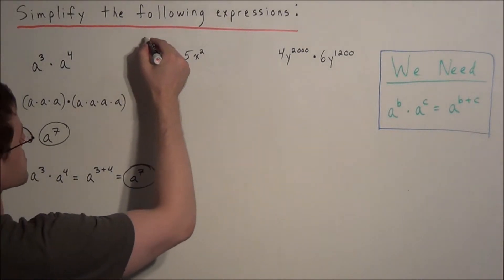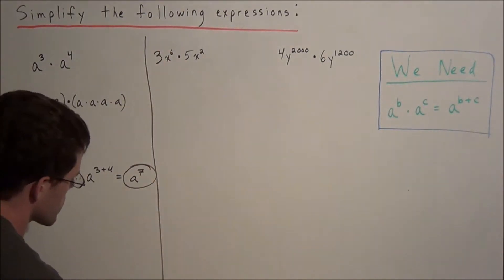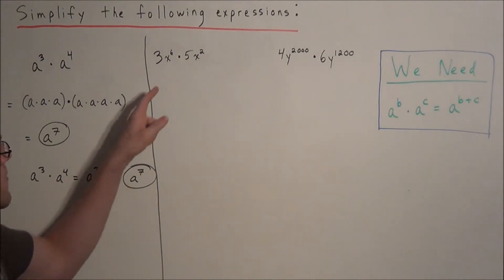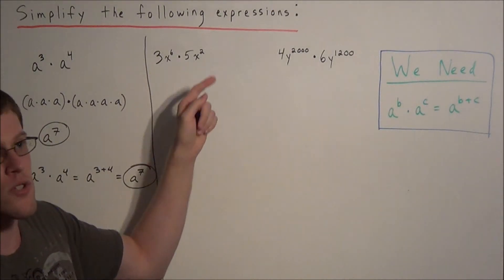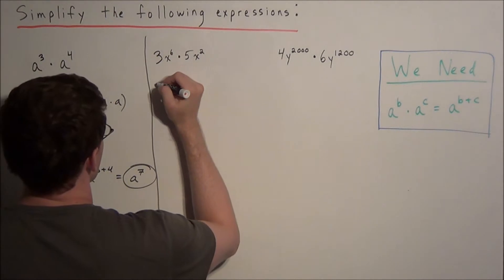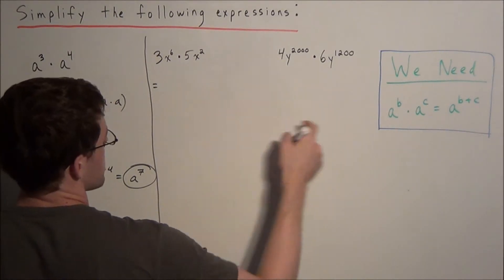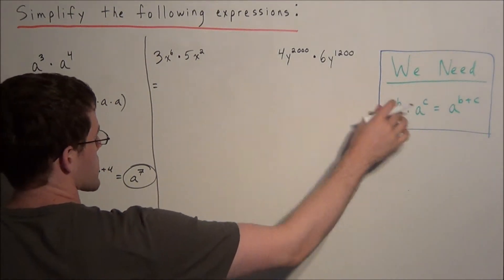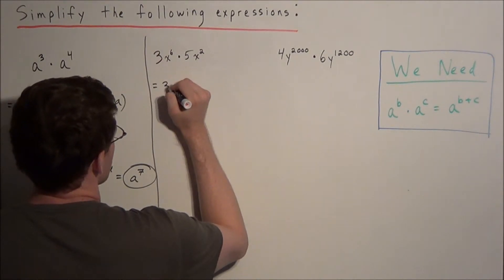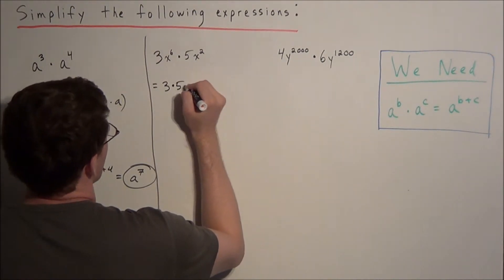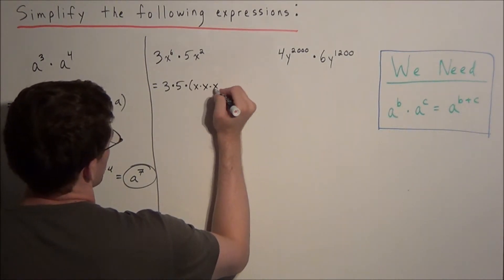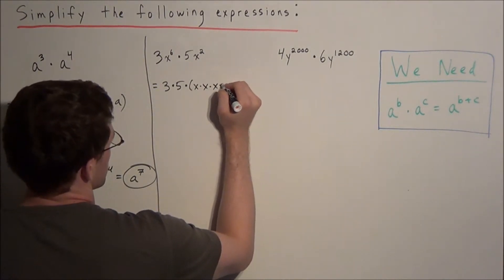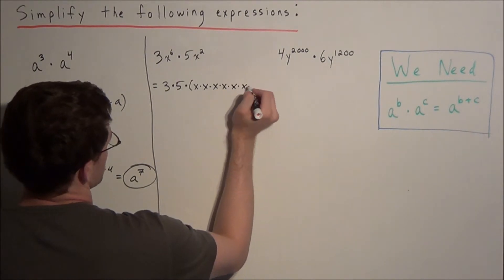It's important to see why this equation works if you're going to trust it. So now for 3x to the sixth times 5x squared — if we weren't sure how to use the property, we could write three times five times x to the sixth. If we really needed to, we could write x to the sixth as x times x times x times x times x times x.